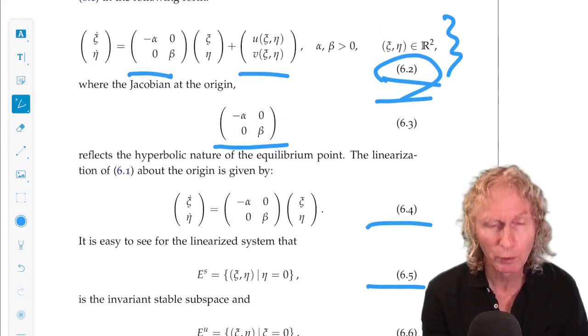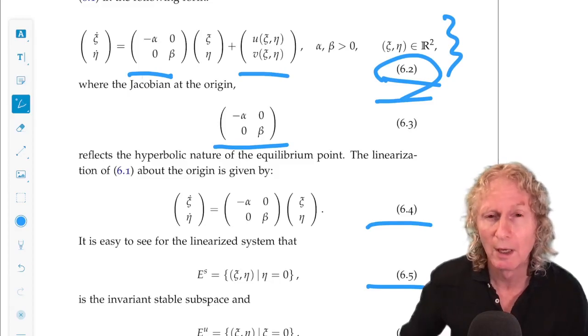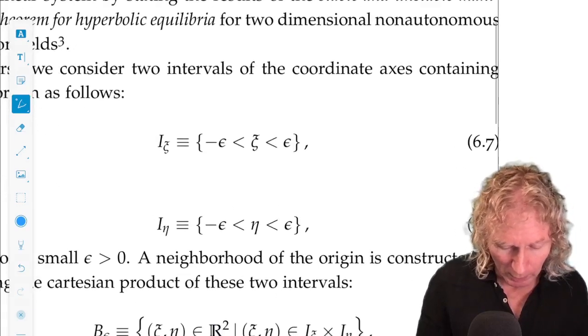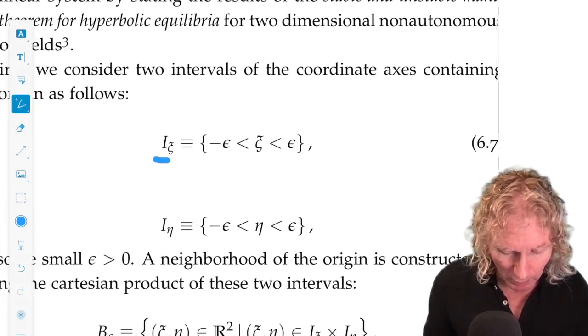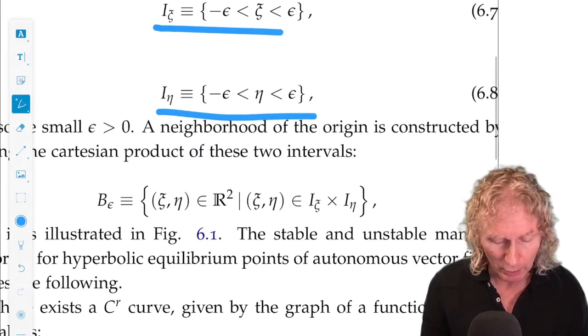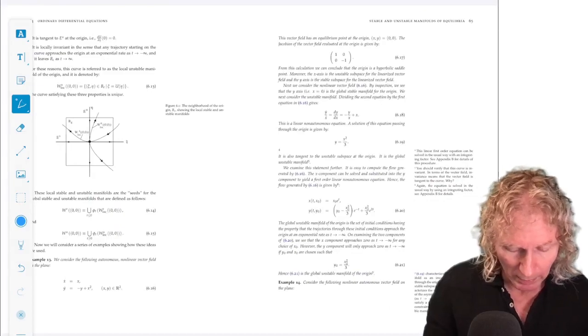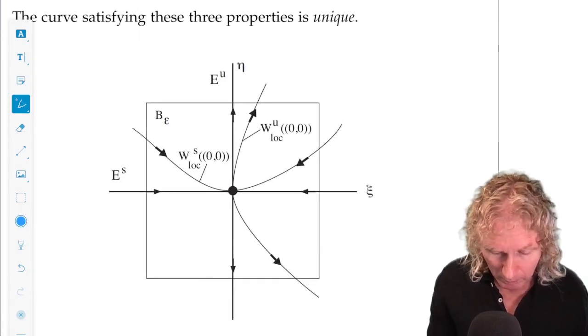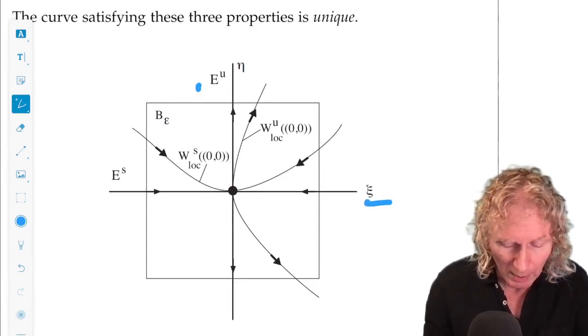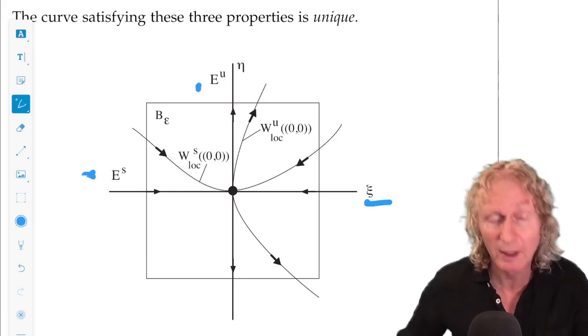Now, what we're going to do next is we want to describe the behavior in a neighborhood of the origin, the saddle point. So, we need an explicit expression for the neighborhood. So, we're going to make a small interval about the origin along the horizontal axis, a small interval about the origin on the vertical axis. Take the Cartesian product, and that's going to give us a little box. And on the next page, I'll show you a picture of that box. We see that the horizontal axis is the stable subspace, the vertical axis is the unstable subspace.